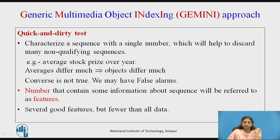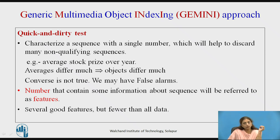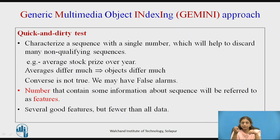The quick and dirty test works by representing the data in one or a few numbers instead of using the complete data, helping to discard non-qualifying sequences. For example, with one year of stock prices (at least 253 values), if we compute just the yearly average, we reduce to a single value. If the averages of two companies differ greatly, the objects clearly differ — but the converse is not necessarily true, so false alarms are possible.